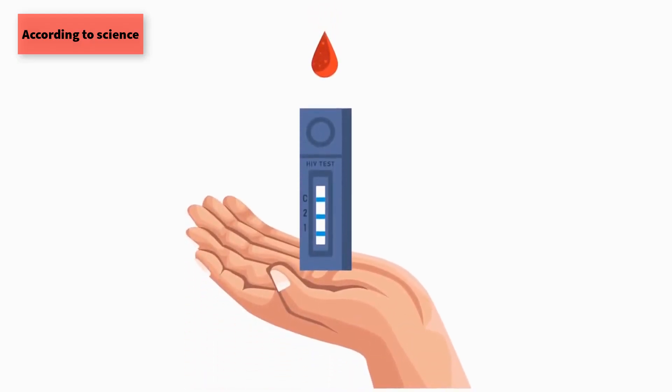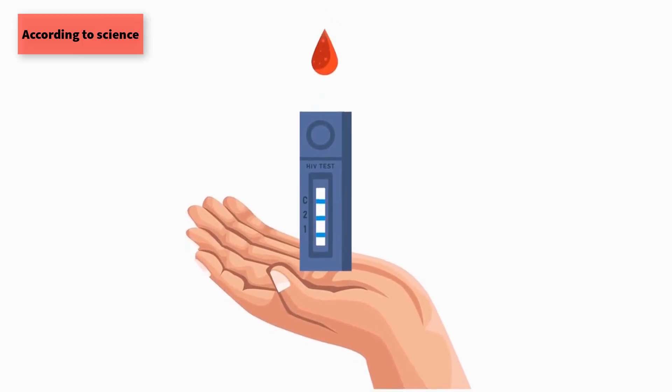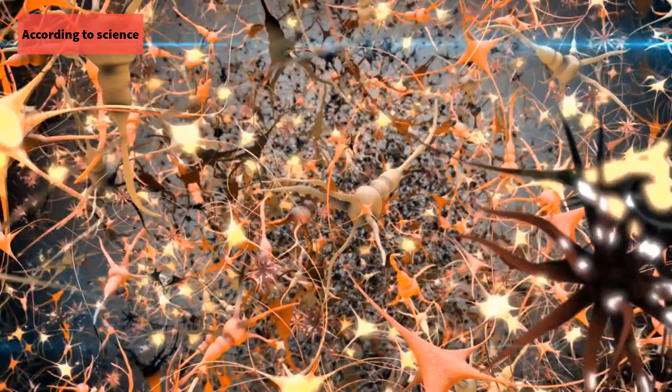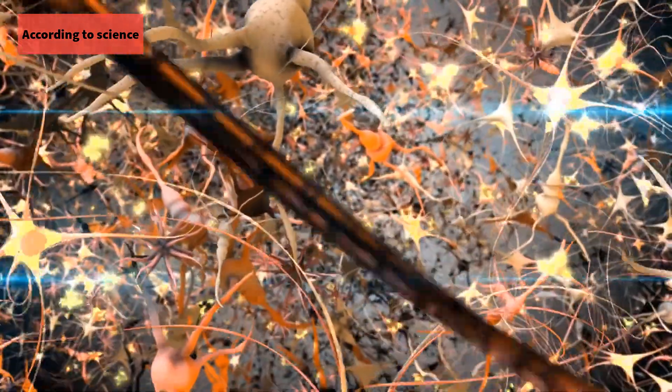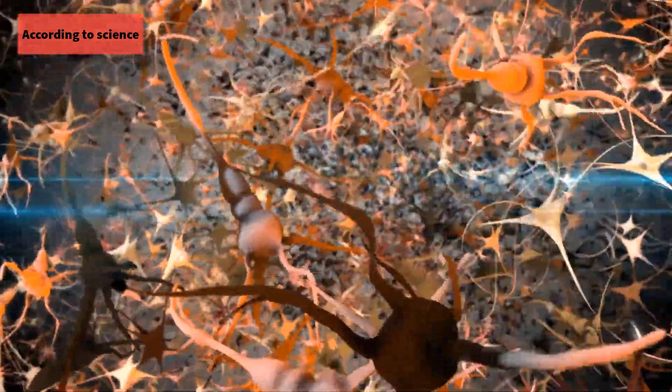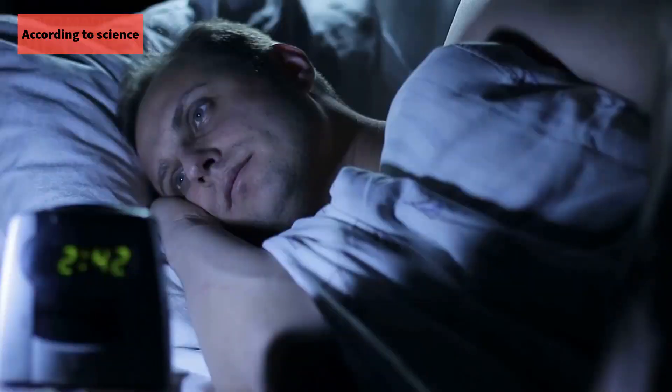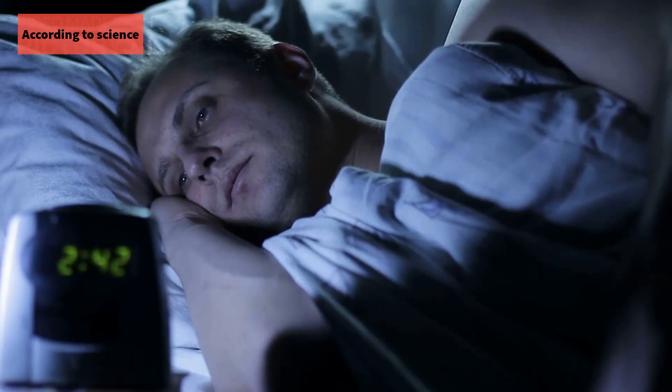Tryptophan aids in the maintenance of your body's proper nitrogen balance. It also contributes to the production of serotonin, a brain chemical neurotransmitter. Serotonin is a neurotransmitter that regulates your mood, appetite, and sleep.